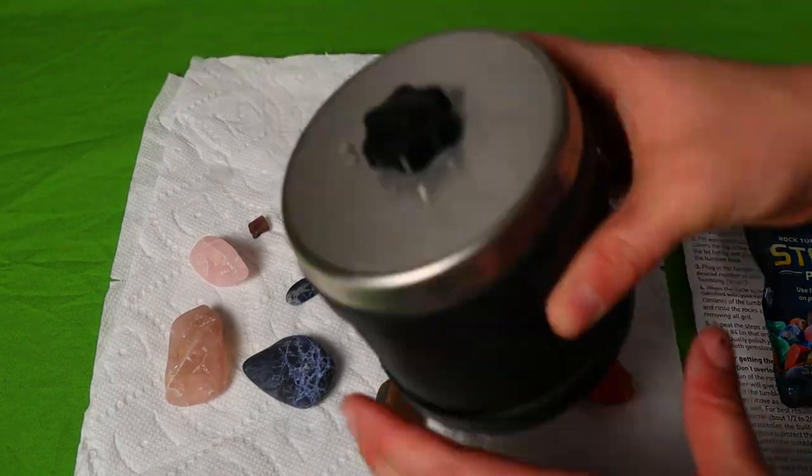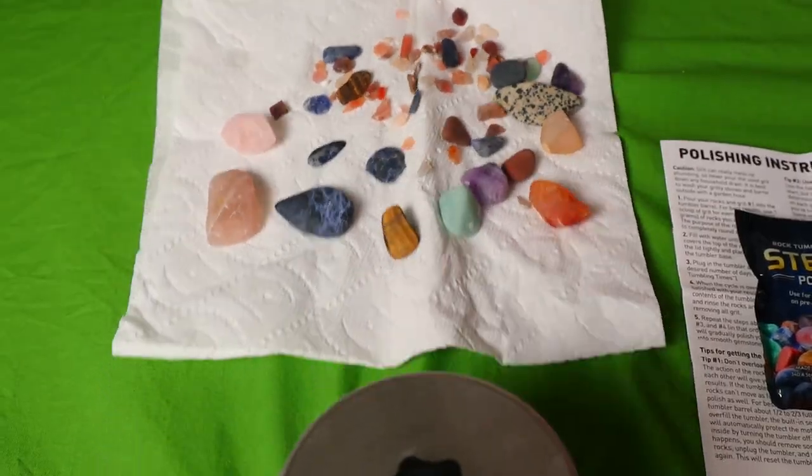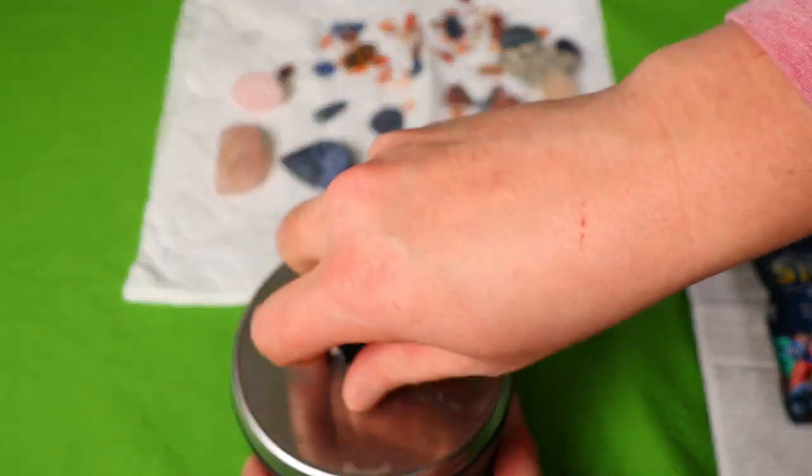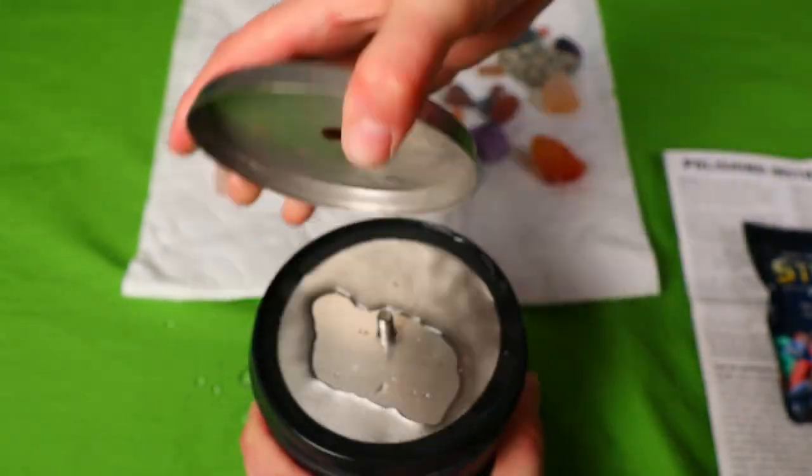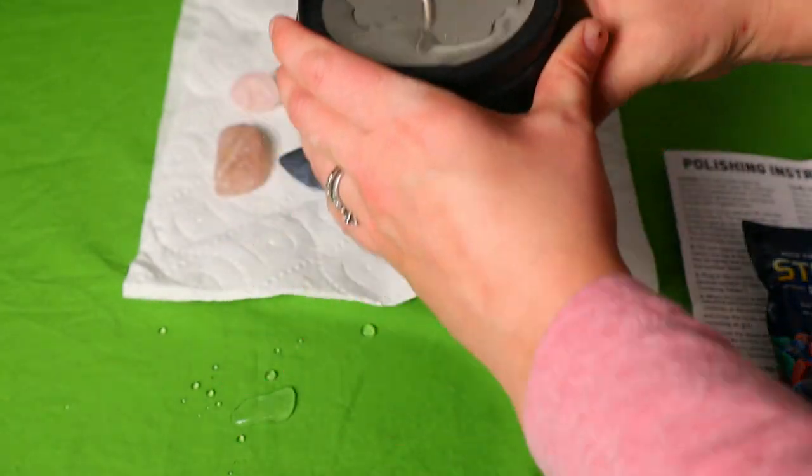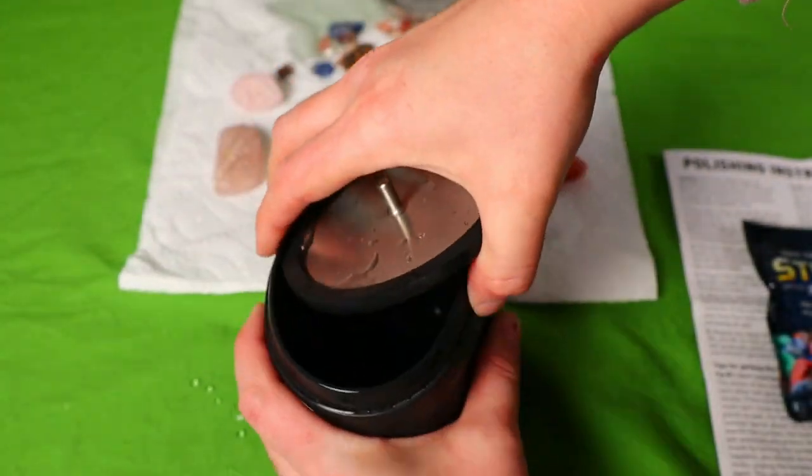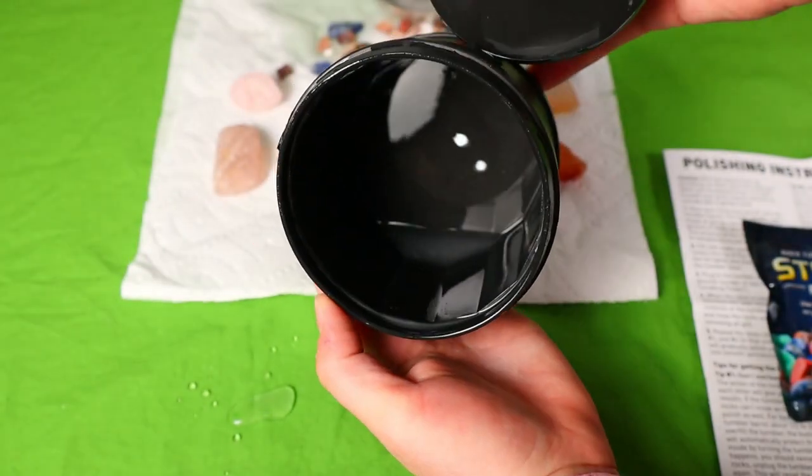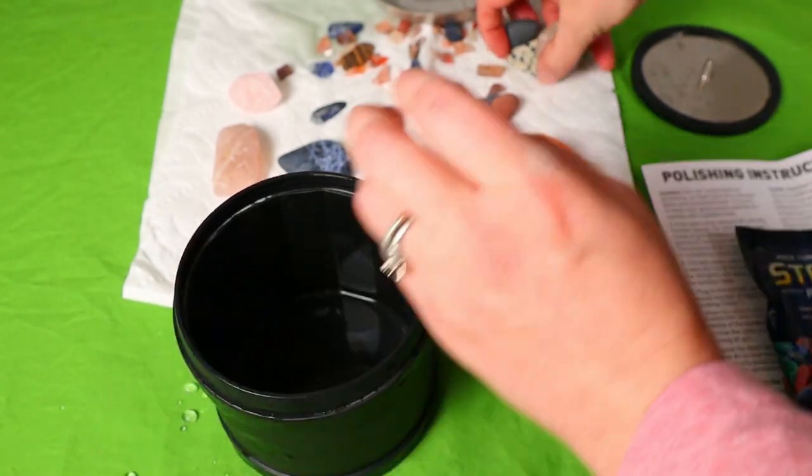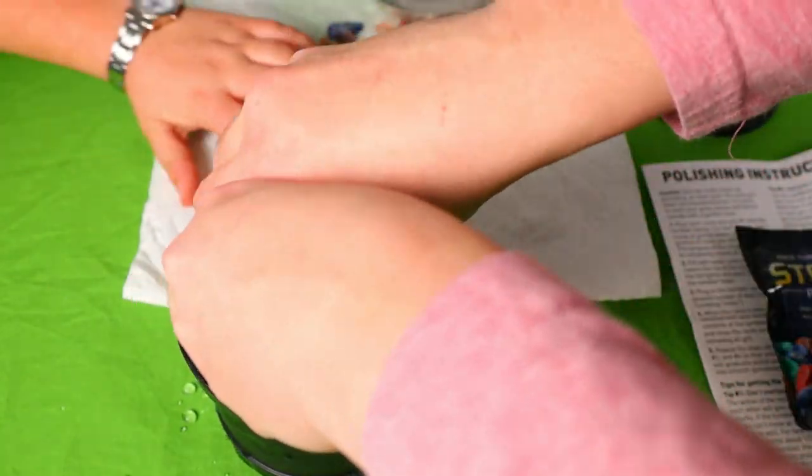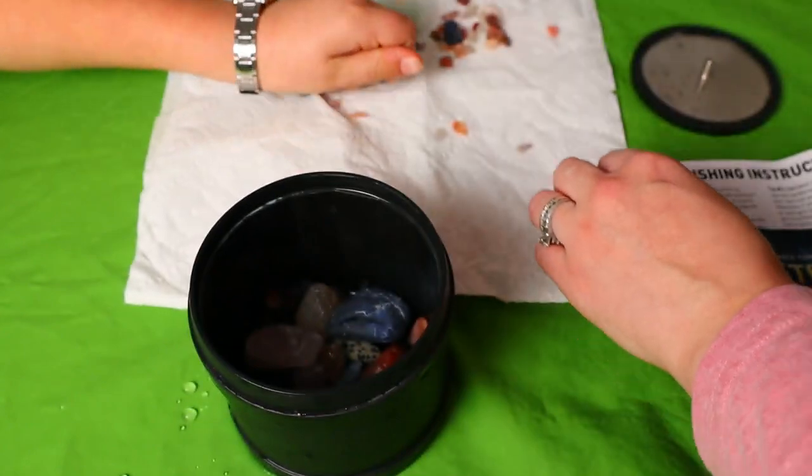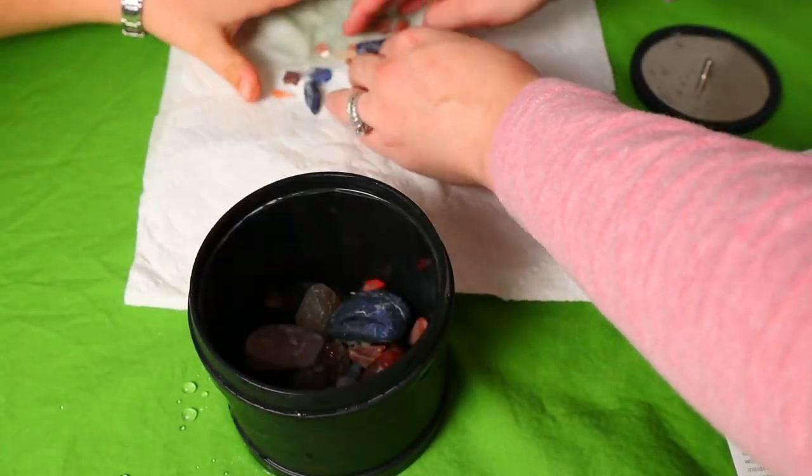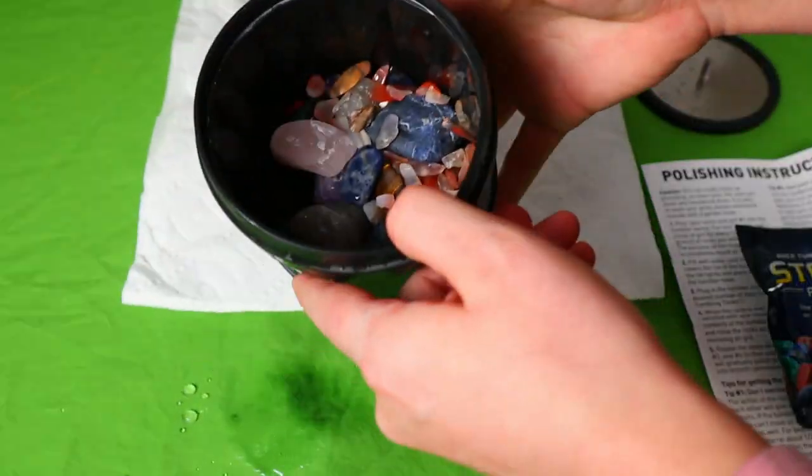We're going to take our tumbler here and open it back up. We've got it all rinsed out and we're going to put our rocks back inside. It is a little wet. No big deal. So it's all clean. And we're going to put our stones back inside ready for the final stage of polishing. And this is stage four.